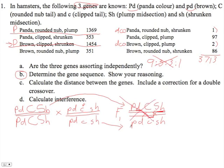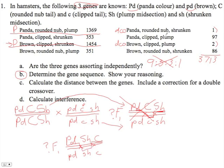Let's move shrunken to the middle and see what happens. Taking the F1 — remembering this arrangement is hypothetical — I'm going to put PANDA, then shrunken in the middle, and CLIPPED over here, with all loci recessive on the other chromosome. When I do my double crossover and follow it through, I've got PANDA, SHRUNKEN, PLUMP. And if we look, we've got PANDA, SHRUNKEN, and the big C — ROUNDED NUB. That one fits.